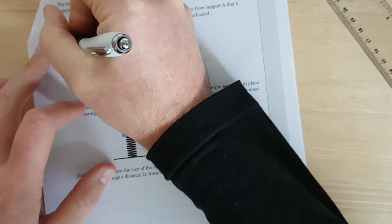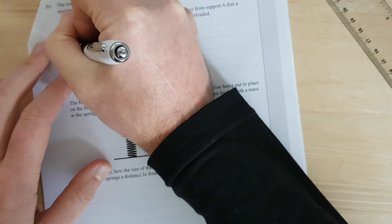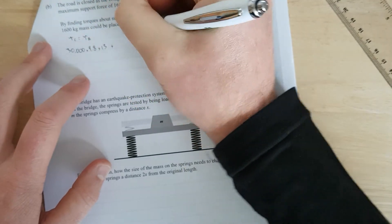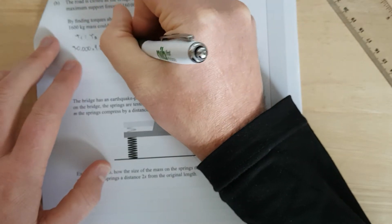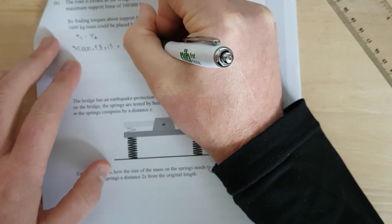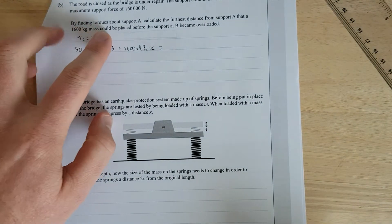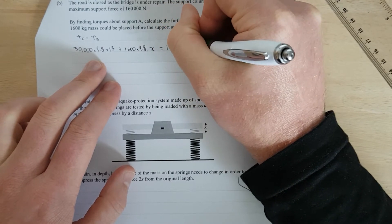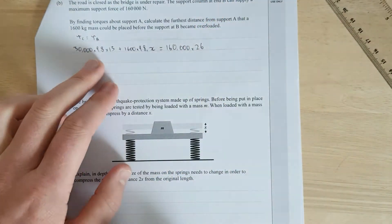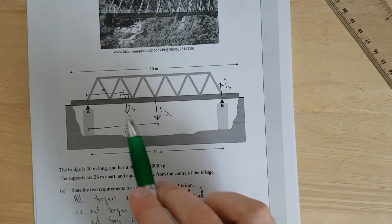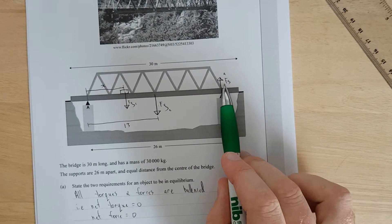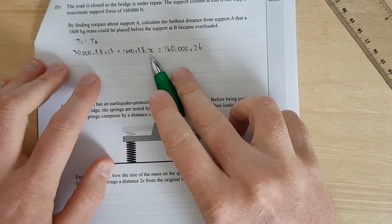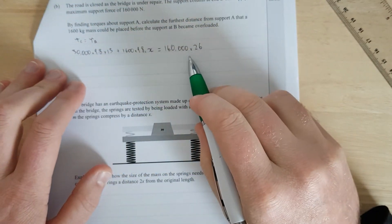So torque is force times distance. The force of the bridge is 30,000 times 9.8, that's mass times gravity, times the distance which is 13. And that is going to be plus the force of that mass of objects, 1600 times 9.8 times X. And that is going to be equal to the support supplied by B, which is 160,000 times its total distance, 26 meters away from B. And now all we need to do is literally just solve for X.